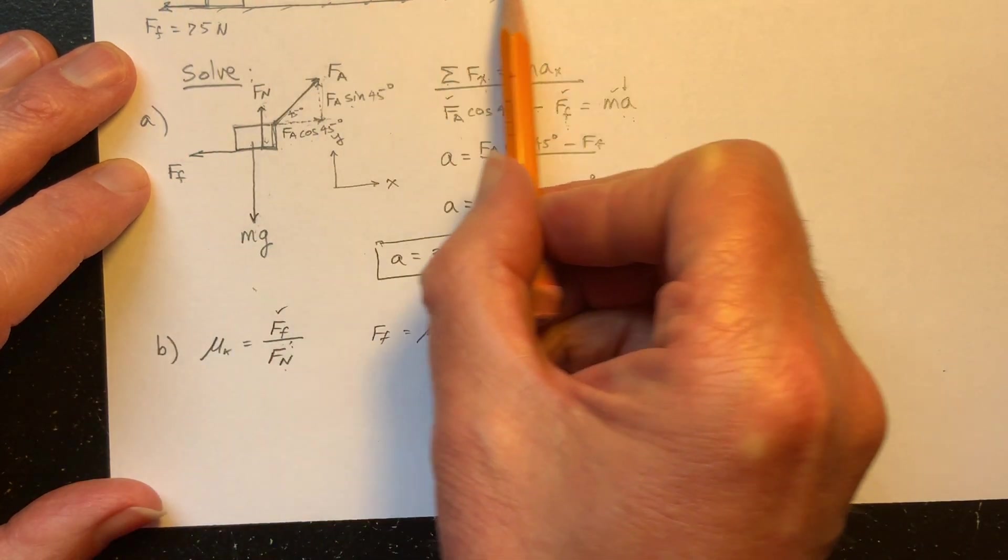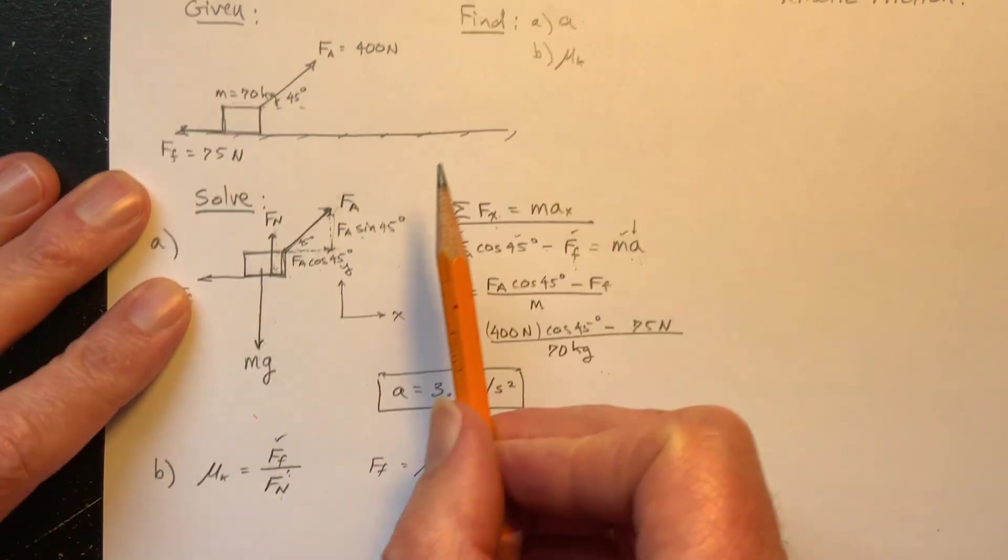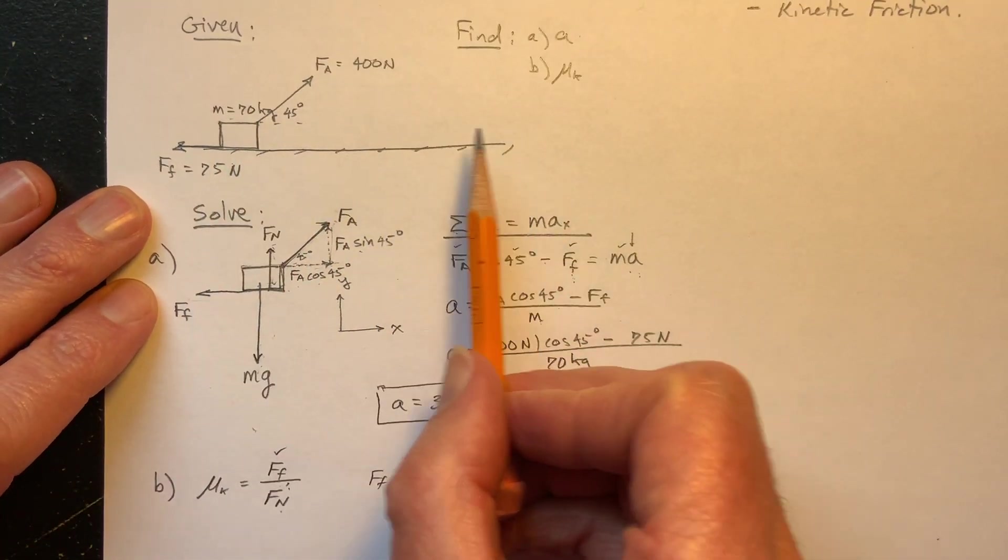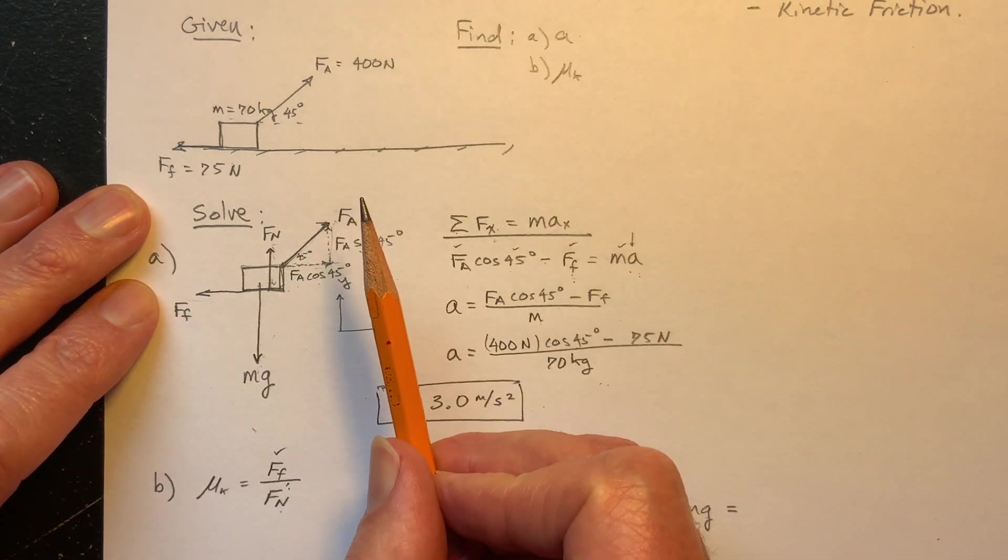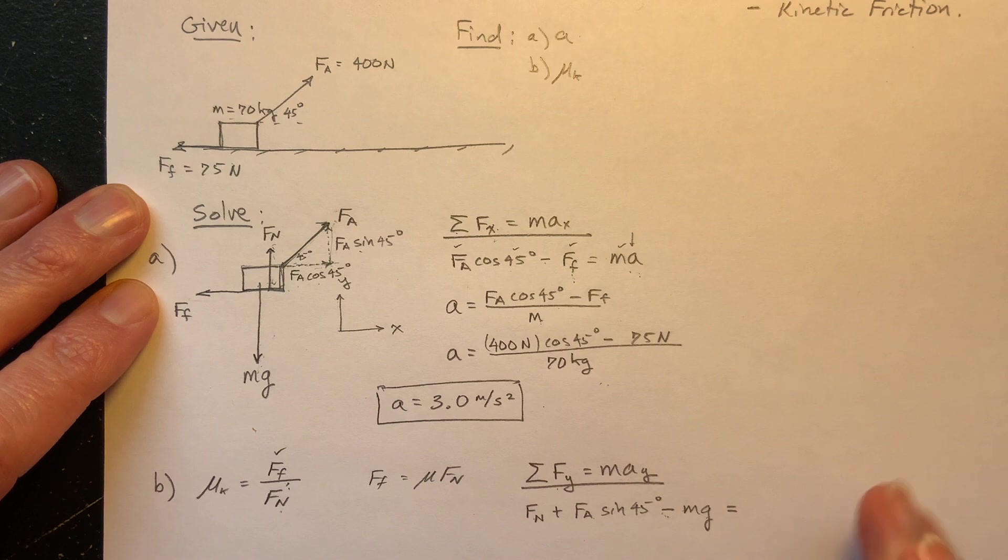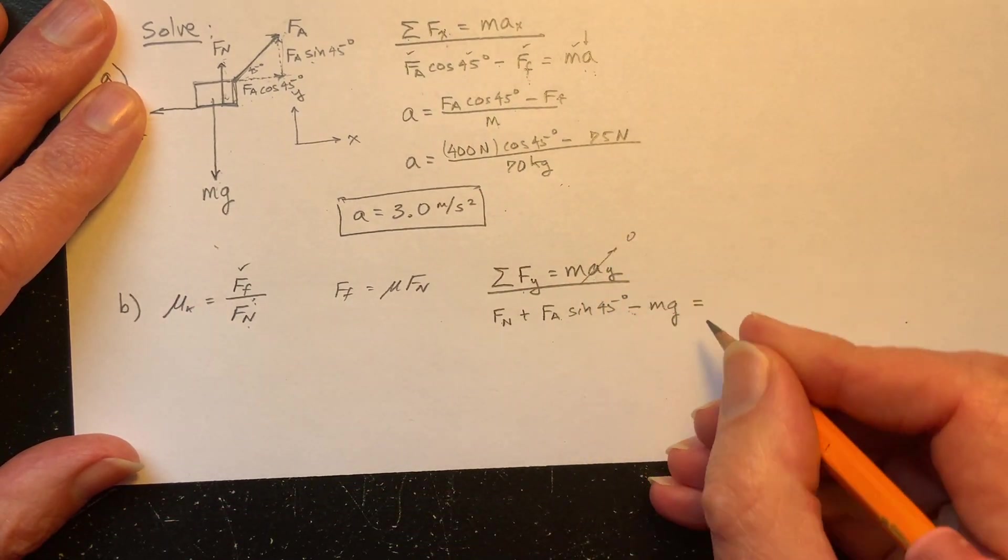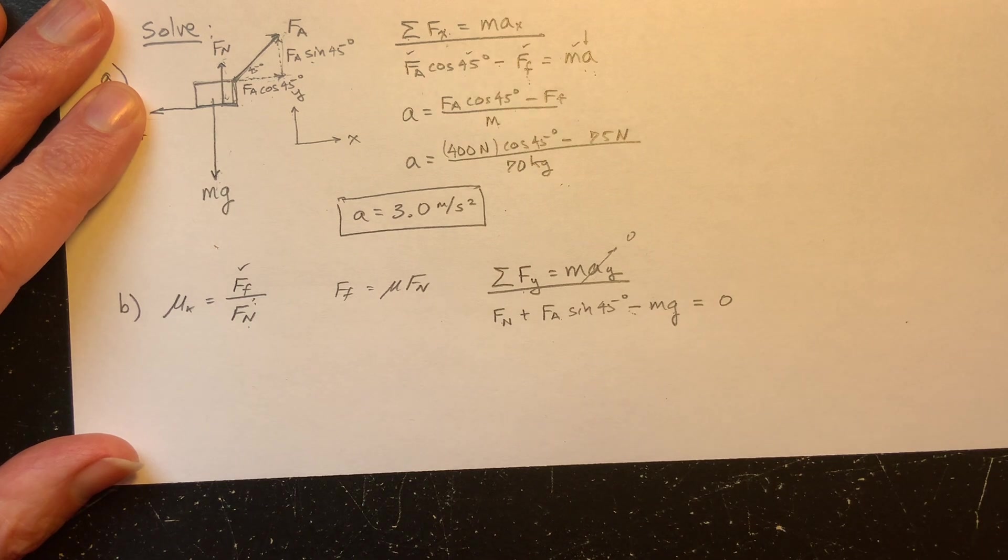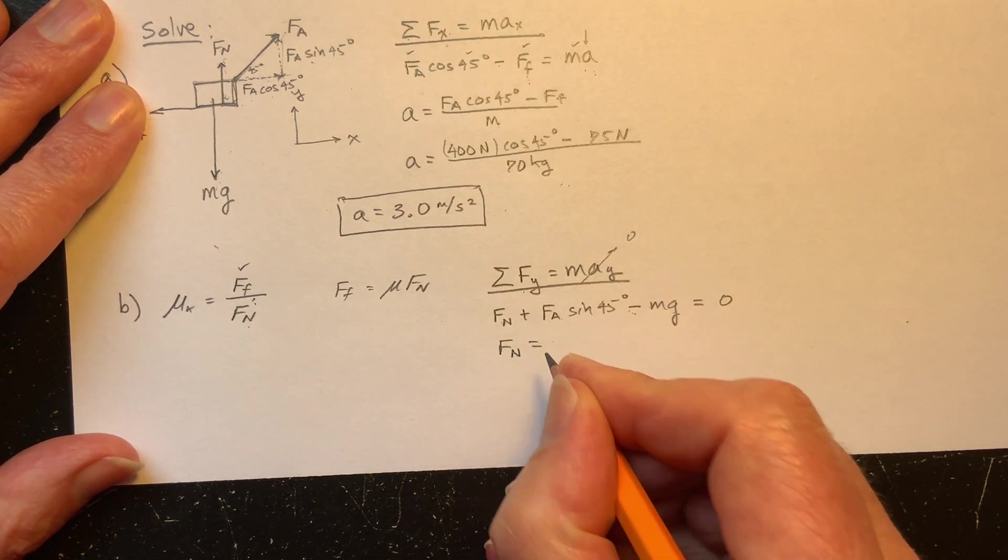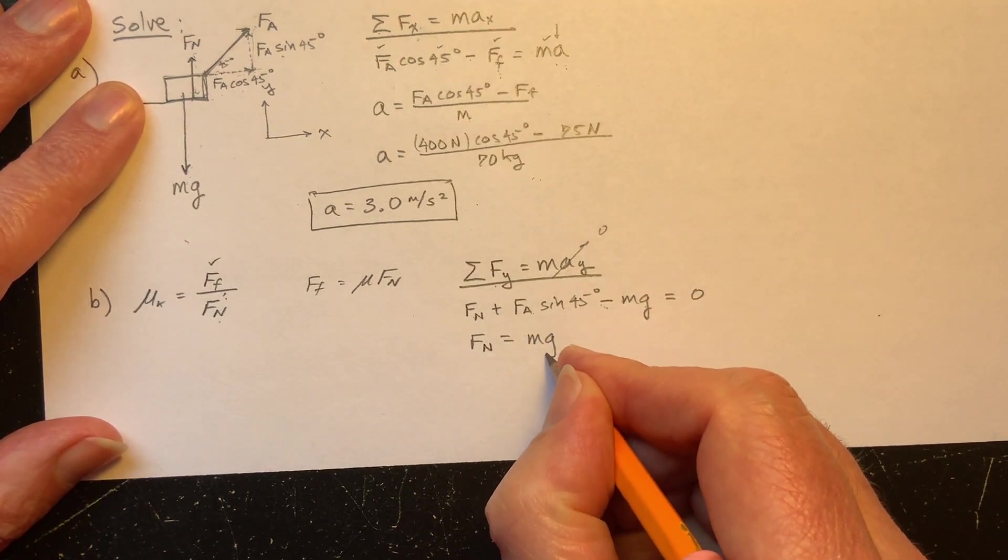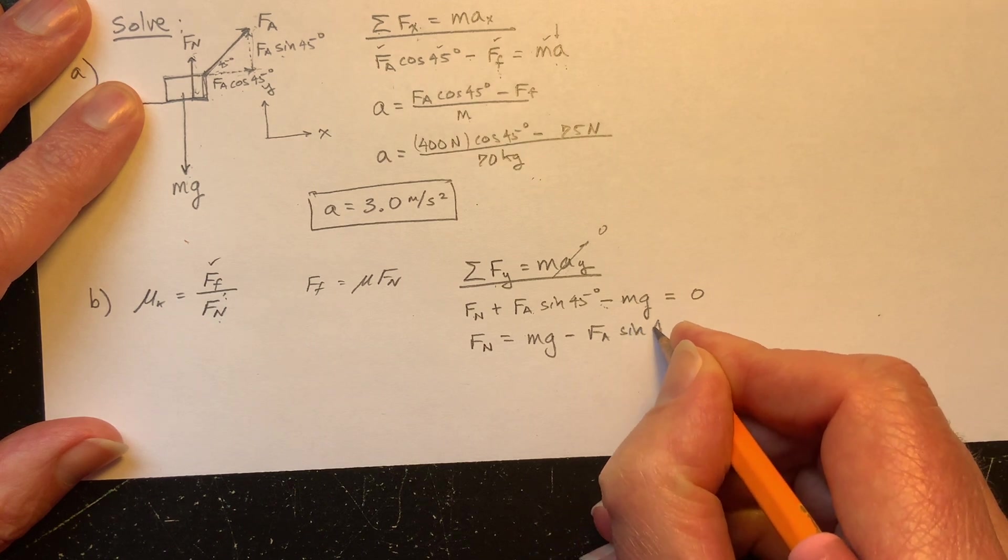What is the acceleration in the y direction here? Well, think about it. The crate's going to be pulled to the right. Its motion is constrained. This motion is constrained to move in the horizontal direction. It's not going to fly up into the air. So the acceleration in the y direction is zero.